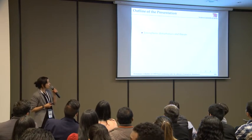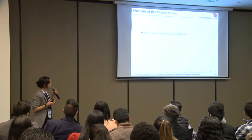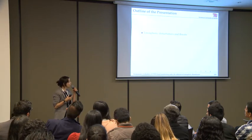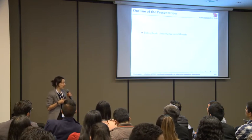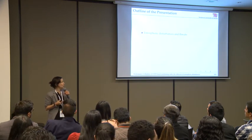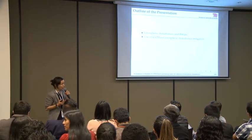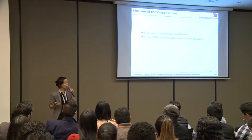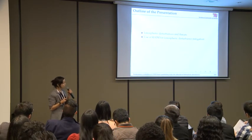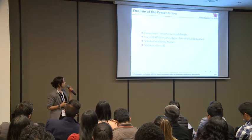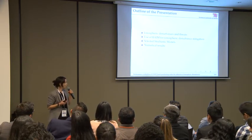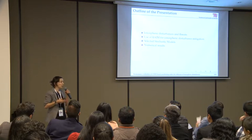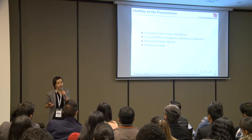Before I move into the details of my presentation, I would like to shortly describe the outline. Firstly, I will define what ionospheric disturbances are and how they impact GNSS based positioning. Then I will describe one algorithm we use to control the reliability of GNSS positioning, and some selected stochastic models to improve efficiency. Finally, I will present numerical results and conclusions.